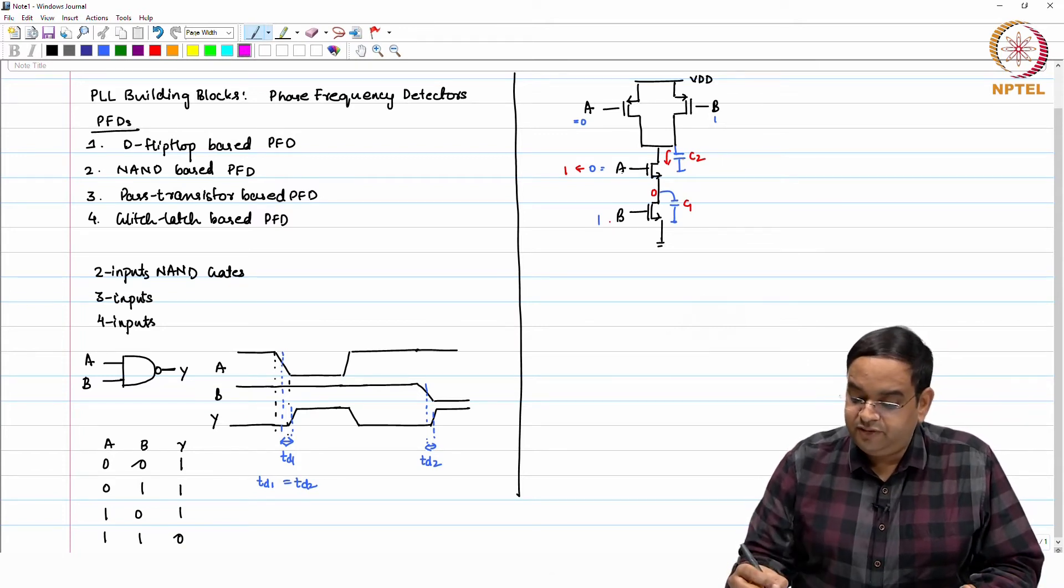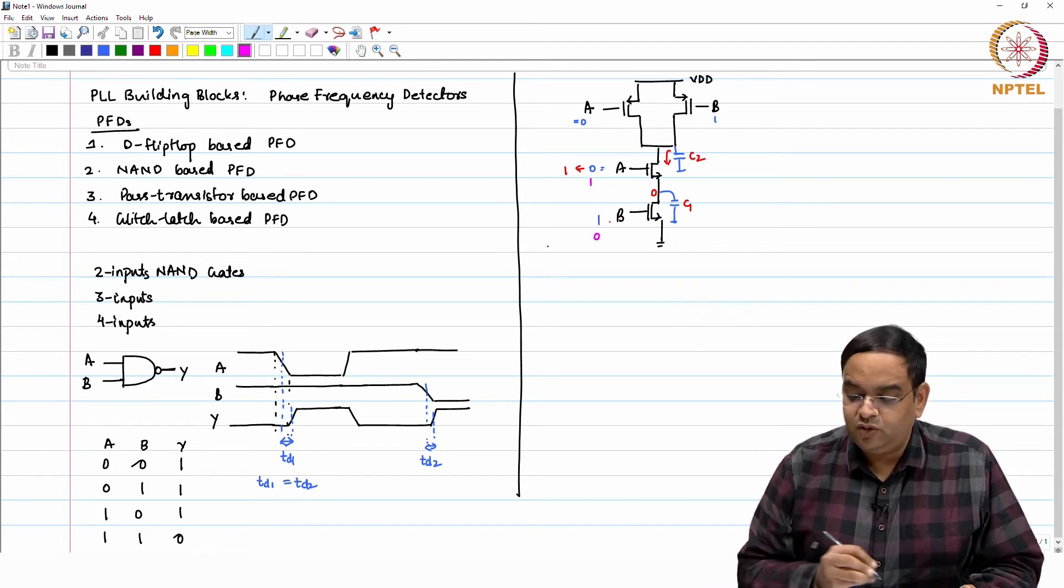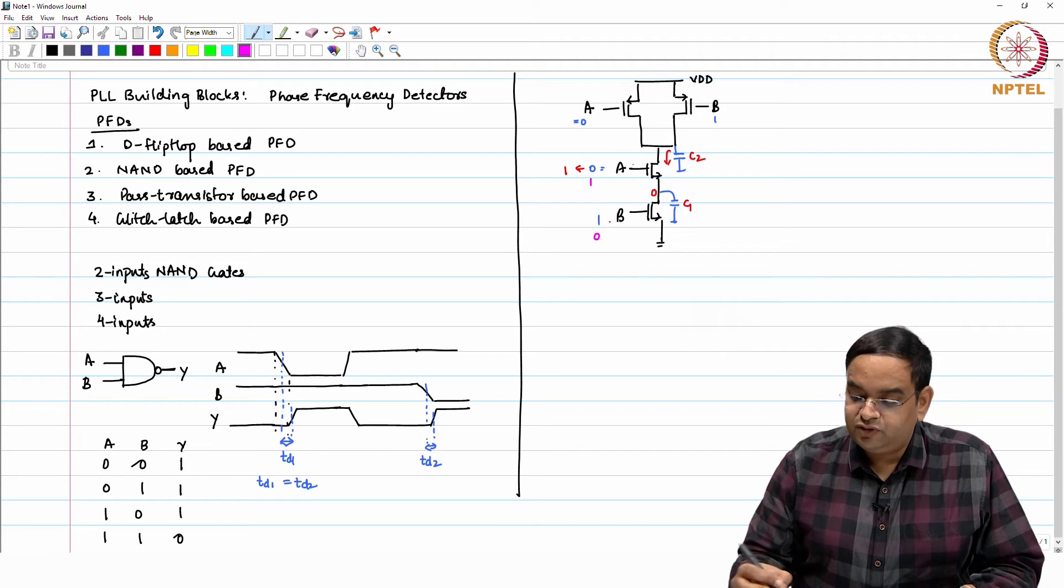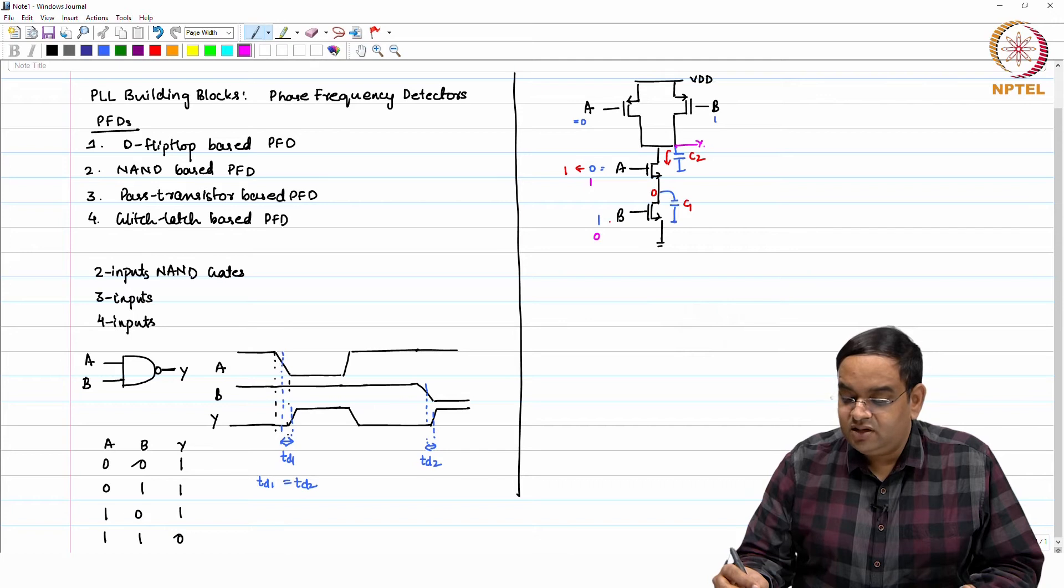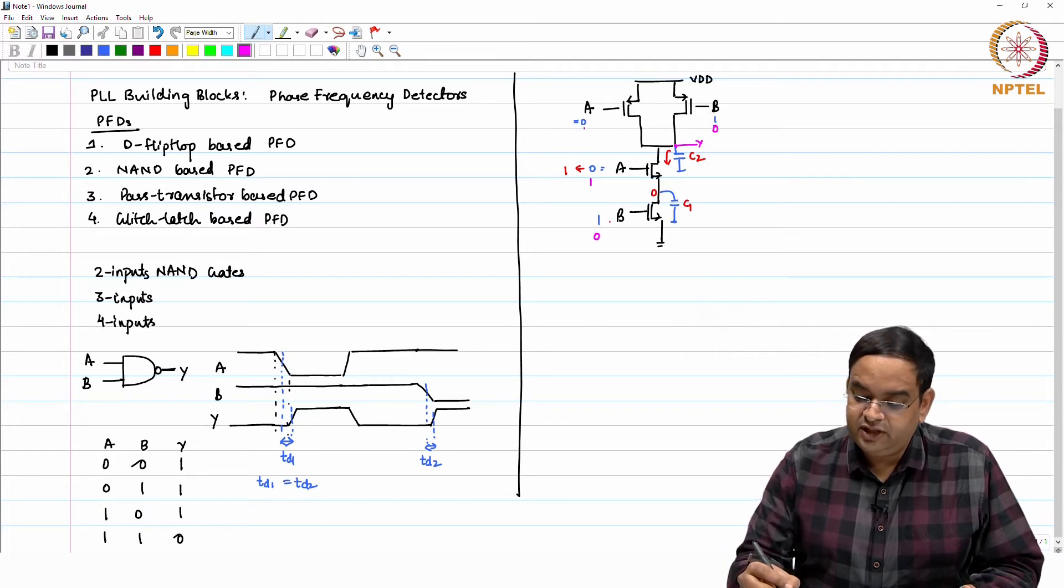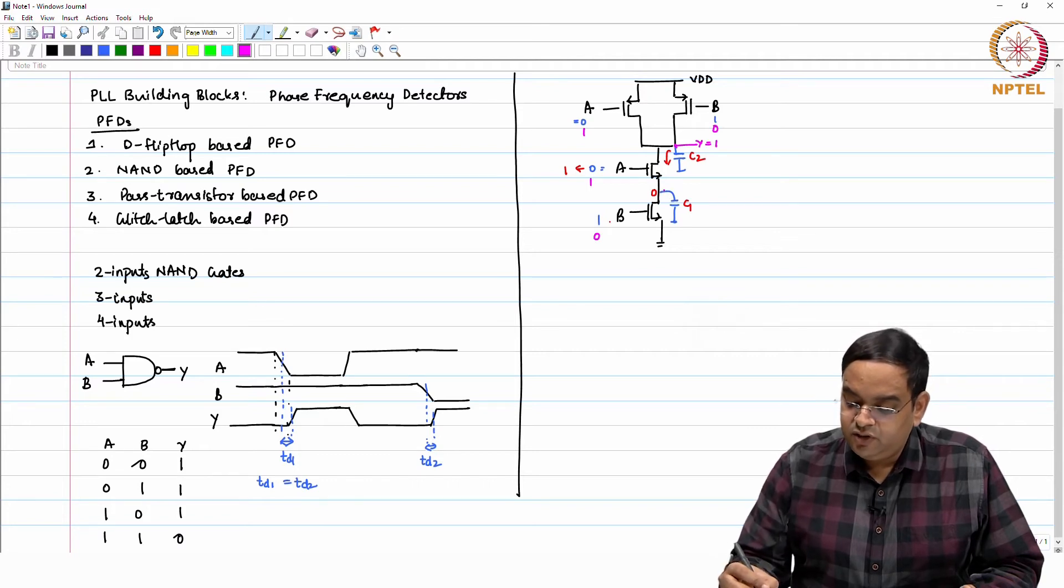In place, if you have A as 1 initially and B as 0, and if A was 1, the output node - this Y node - because B was 0, this node was initially 1. And this particular node, because A is 1, is charged to VDD minus VT.